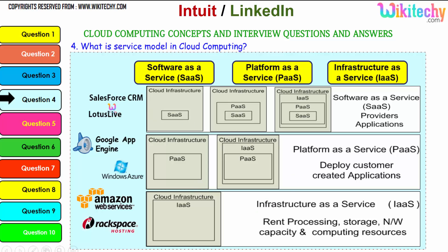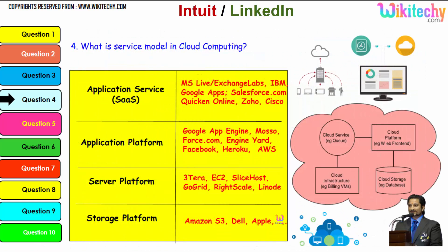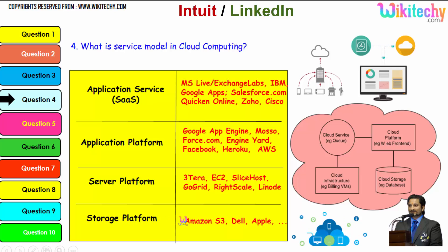Examples for SaaS include Lotus Live and Salesforce CRM. For PaaS, examples are Windows Azure and Google App Engine. For IaaS, you have Amazon Web Services and Rackspace Hosting. Digging further into service models, the application service, application platform, and server platform each have typical examples, and the storage platform is provided by Amazon S3, Dell, and Apple.